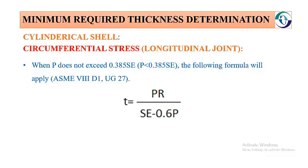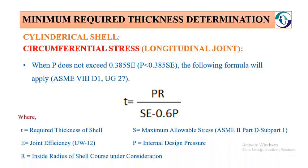Here is the formula: t is equal to PR over (SE minus 0.6P). Where t is the required thickness of the shell, E is the joint efficiency in accordance with UW-12, R is the inside radius of the shell, S is the maximum allowable stress in accordance with ASME Section II Part D Subpart 1, and P is the internal design pressure.